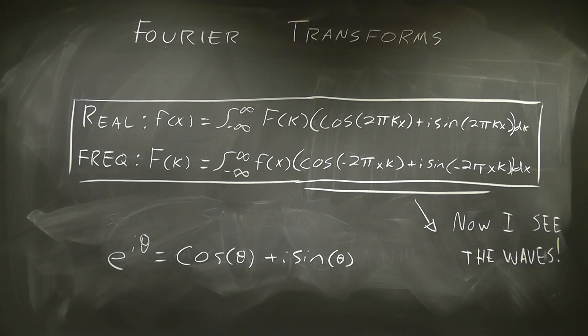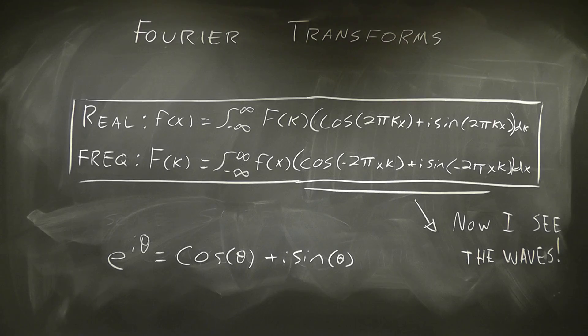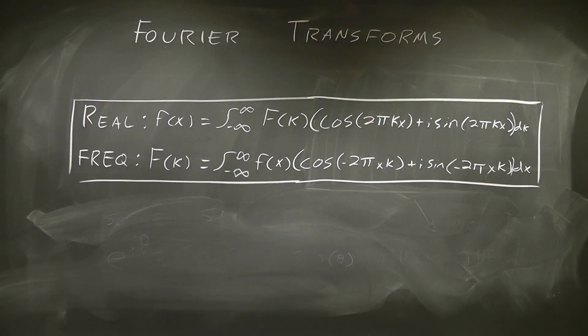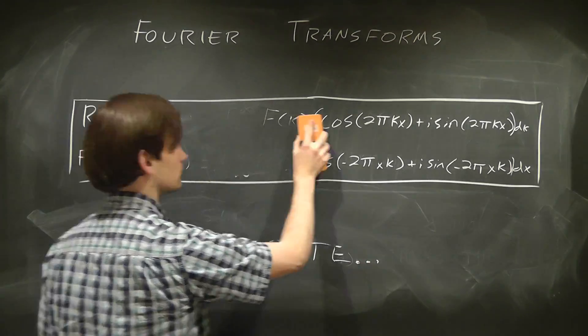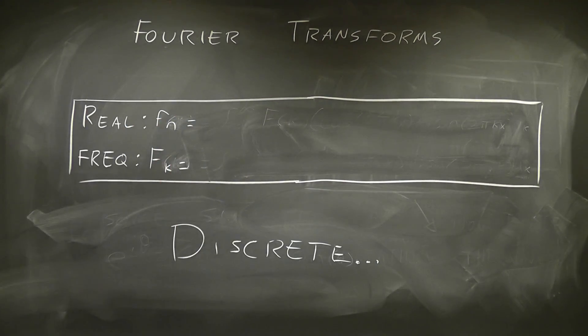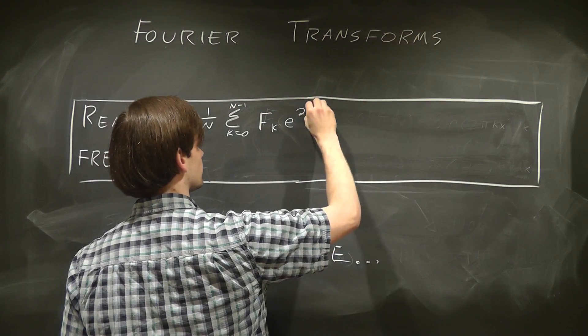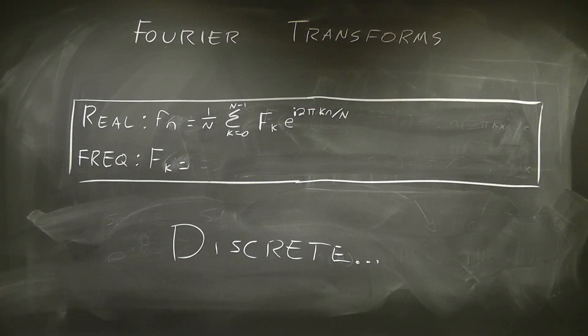Basically, everyone comes to terms with these equations in different ways. For me, it becomes a little bit easier when we put them into a form that I can program. To do this, we need to discretize them in the form of a discrete Fourier transform. Truth be told, it doesn't really change the equations that much. We just change the integrals to sums and put some sort of normalization factor in front of the real space formula.